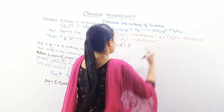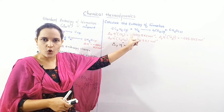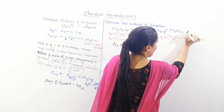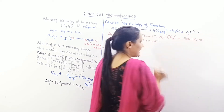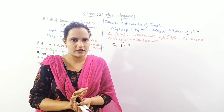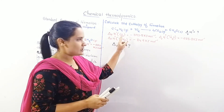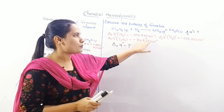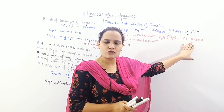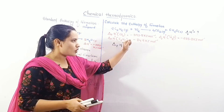A sample question: 2 moles of C2H6 reacts with 7 moles of O2 to give 4 moles of CO2 and 6 moles of H2O. Find delta_f H naught for this reaction. Given: delta_f H naught of CO2 = minus 393.5 kJ per mole; delta_f H naught of H2O = minus 285.7 kJ per mole; and a value for C2H6 is also given.